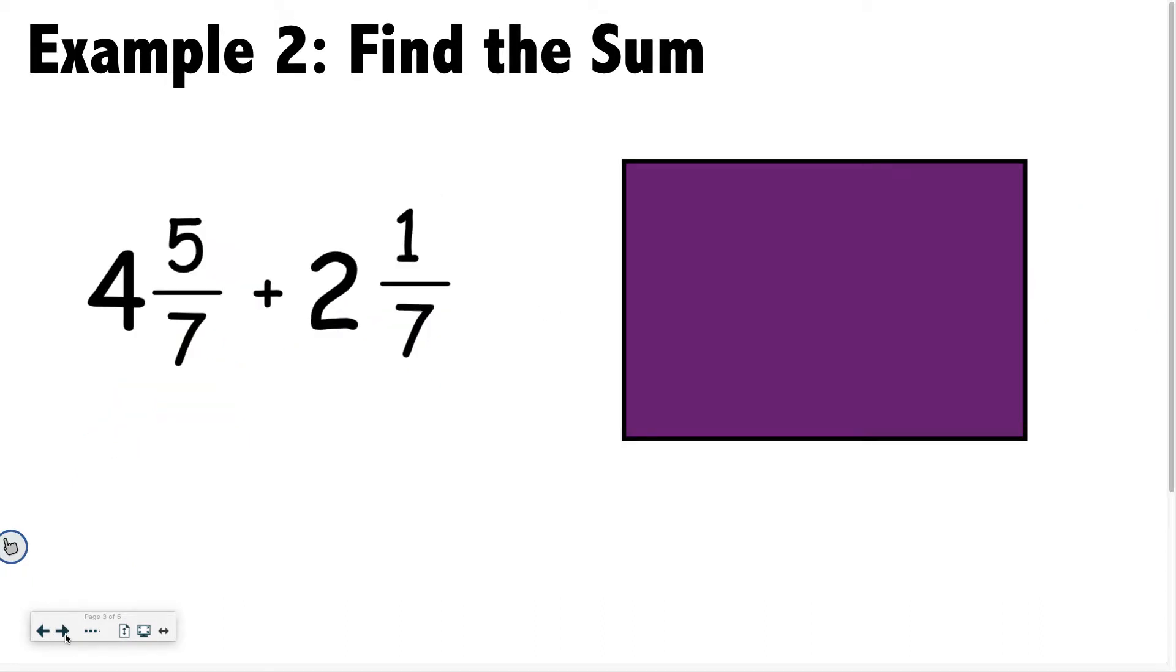All right, example two. What if we're adding mixed numbers? So again, notice my denominators are the same. Okay, so that's great. That means I can still add the tops of my fractions. So I have 6 7ths, but then I'm also going to add my whole numbers, 4 plus 2, which is 6. So my answer is 6 and 6 7ths.